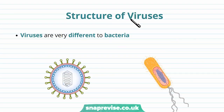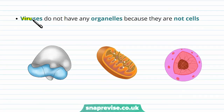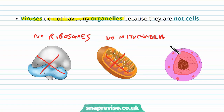Viruses have a very specific structure, and we can see just from a diagram that viruses are very different in their structure to bacterial cells. Bacterial cells are living, just like eukaryotic cells such as plants or animals. Virus particles, on the other hand, are non-living. Because they're not cells, viruses do not have any organelles.